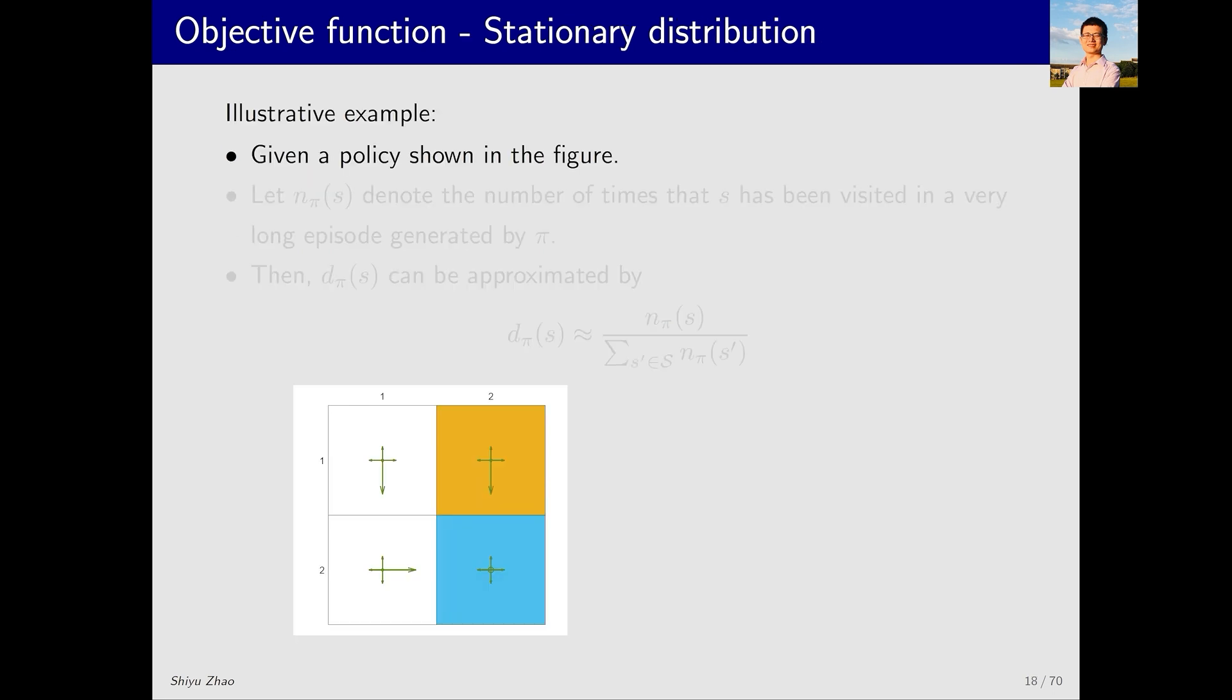Let me demonstrate through an example which I believe is very helpful. Consider this example. I have a policy. This policy, as you can see, is an exploratory policy. Every action has a positive probability of being chosen, but there is also a greater probability of choosing a specific action. So it has certain tendencies. For instance, in these two states it tends to move downward, to the right in this state, and there is a high probability of staying still in this state. Given this policy, we let the agent start from any state and then run many times according to this policy. Let's see what will happen.